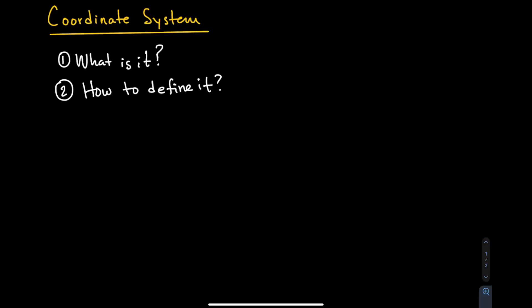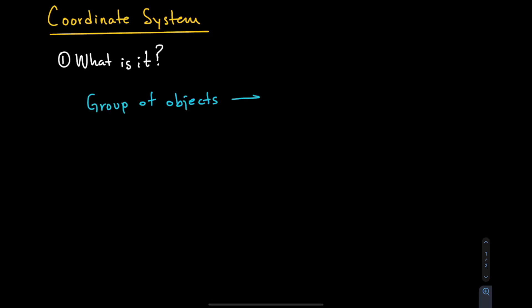In this video we will discuss what a coordinate system is and how it is defined. A coordinate system is a group of objects that allow measurement.